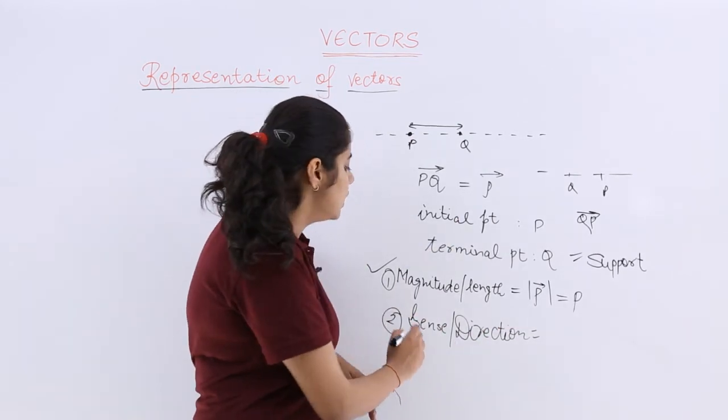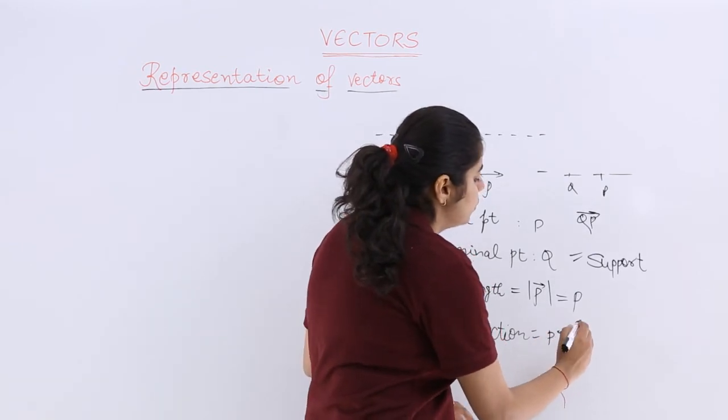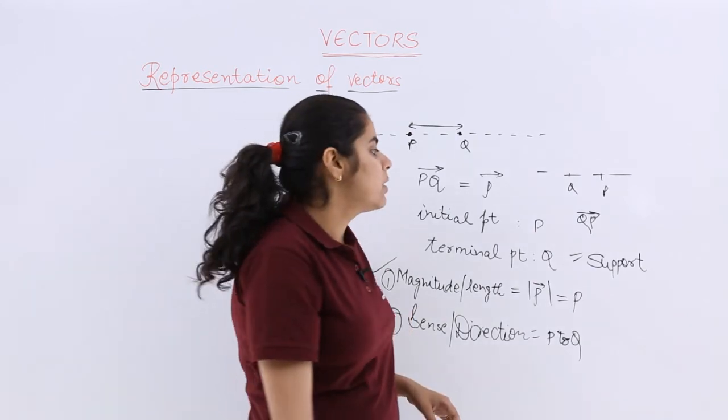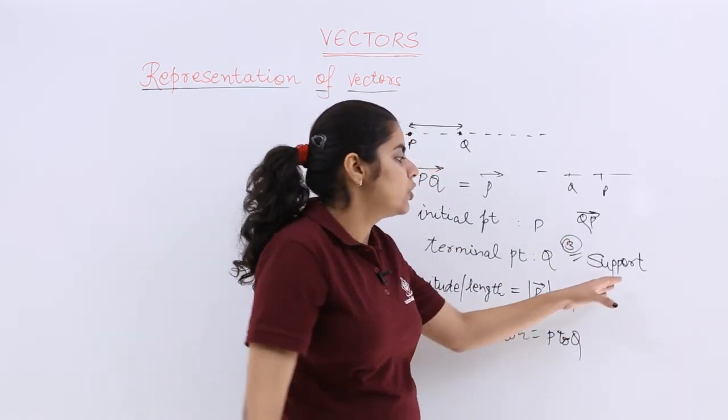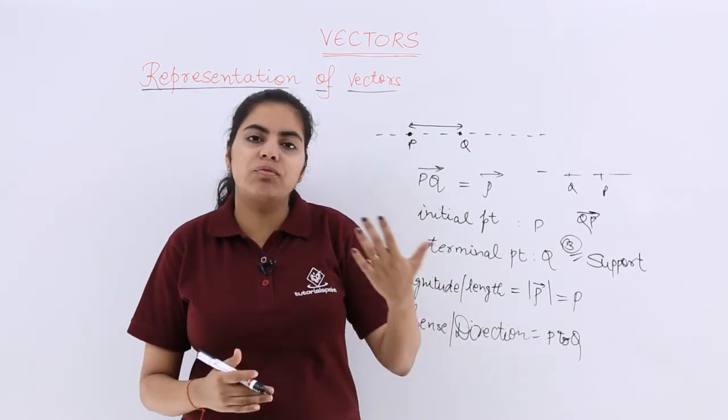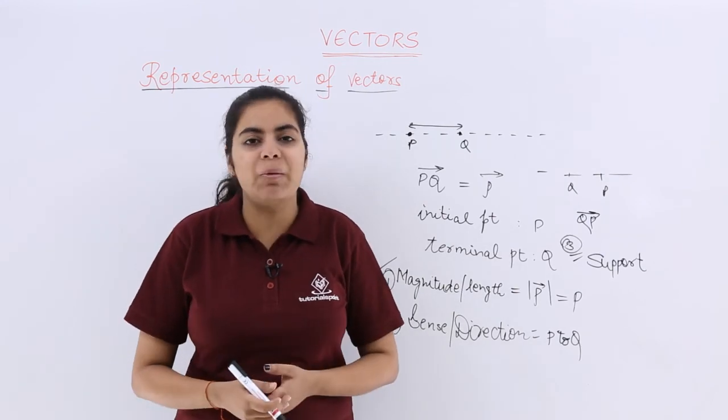The second being the direction - direction I can write from P to Q or from Q to P and so on. The third, last but not the least, being your support. Your support is basically the unlimited line out of which the line segment that you are taking into picture is a part of.